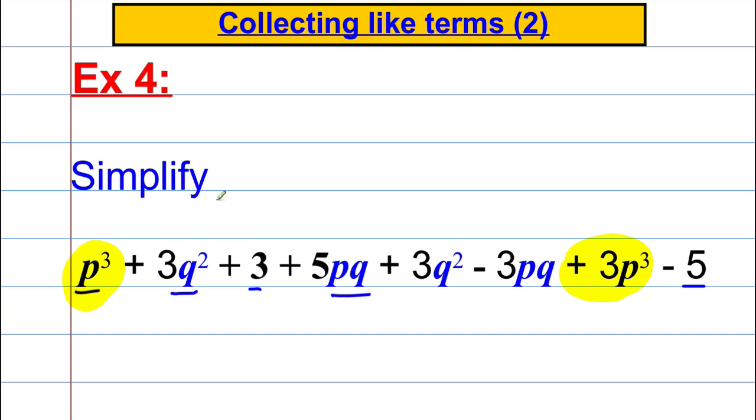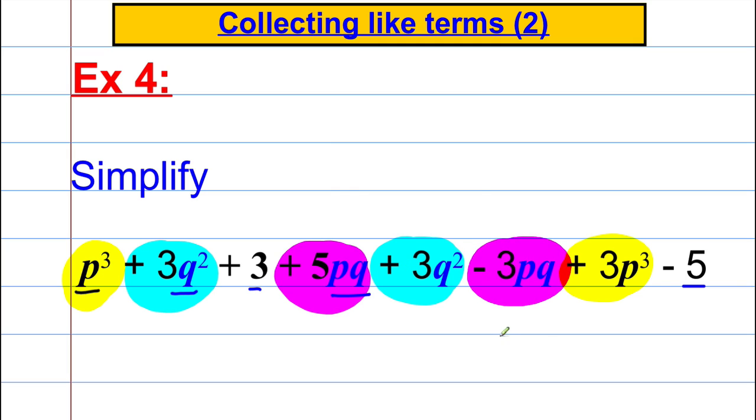Then we've got ourselves 5pq here, take away 3pq there. And lastly we've got ourselves a plus 3 and a take away 5.